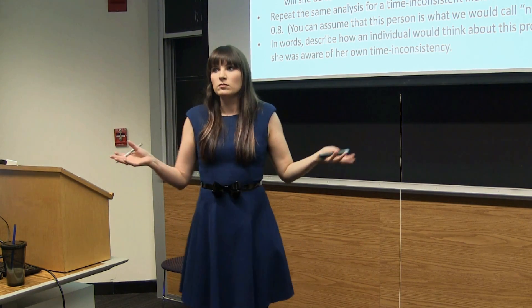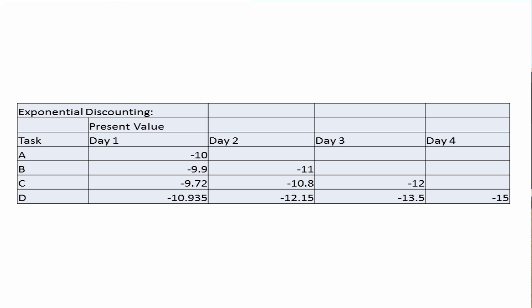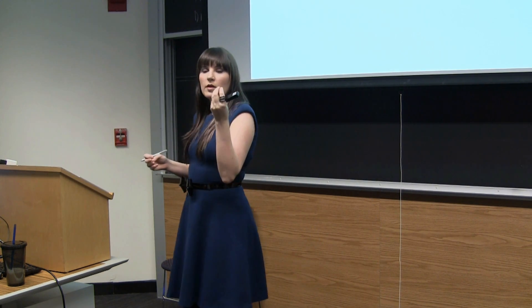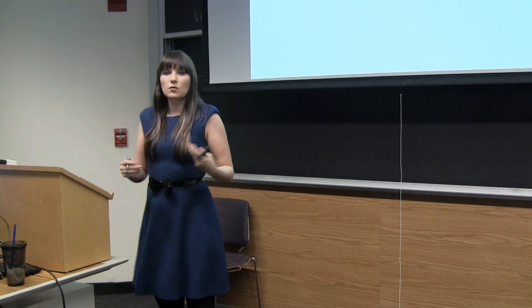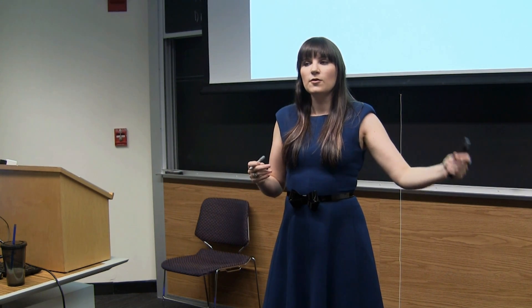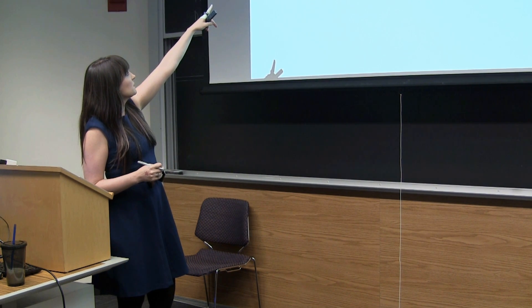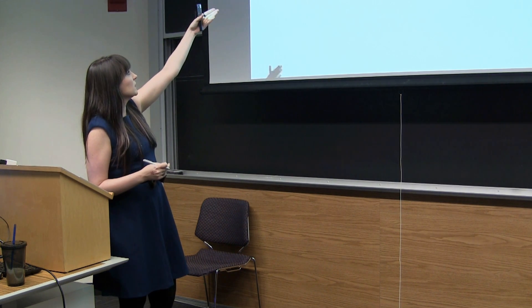We can go through these numbers and ask: what is this person going to do? We're thinking about planning for the future, so we consider the present value of utility, because if we're comparing things happening at different points in time we have to put them on equal footing. For the time-consistent individual, a discount factor δ is applied for each period something is in the future. From the perspective of day one, activity A is on day one so it doesn't get discounted at all.